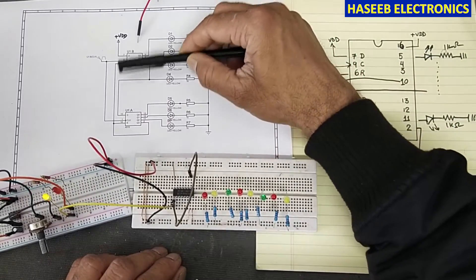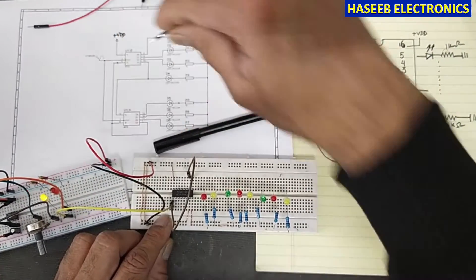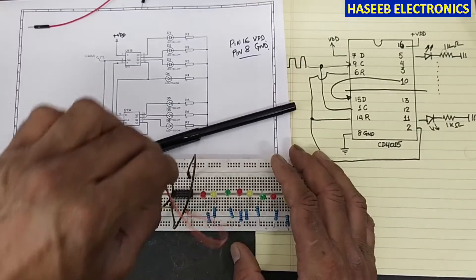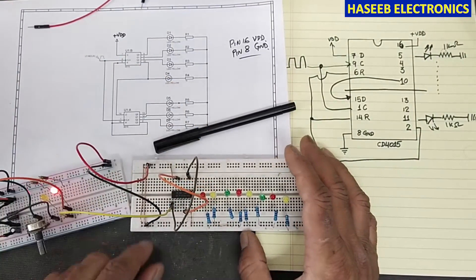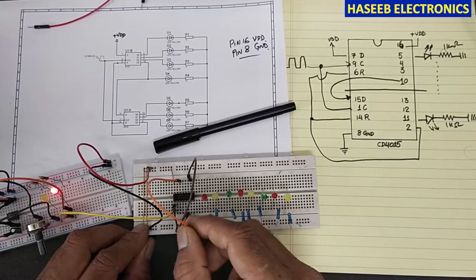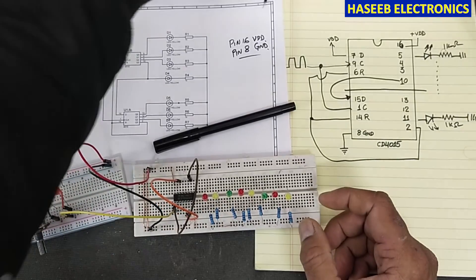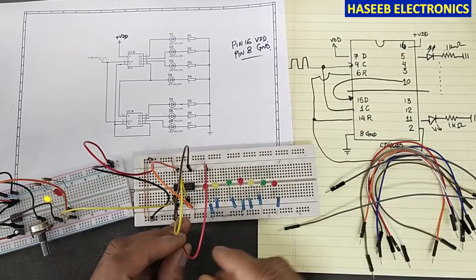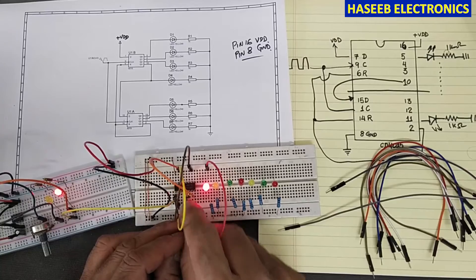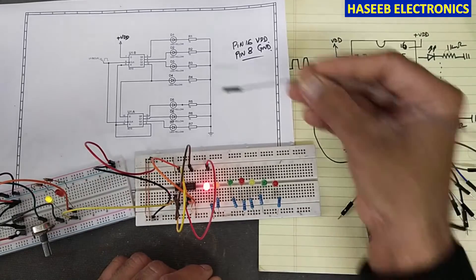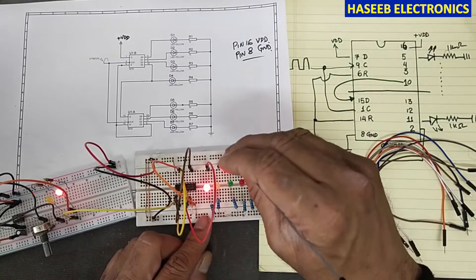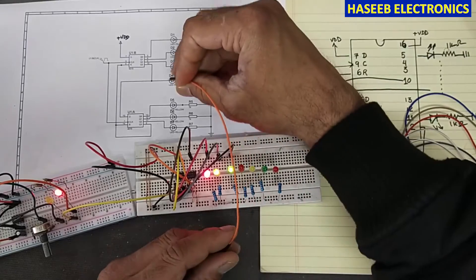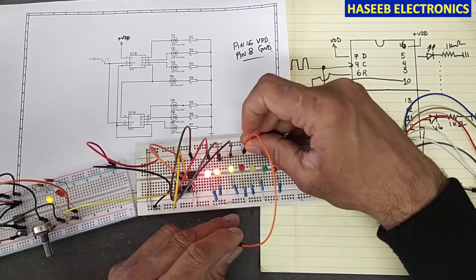Now we will apply the reset signal. Here is pin 6 and pin 14 for reset. Pins 14 and 6 are connected together. We will connect the first LED to pin 5, that is the first output. Then the second LED to pin 4, then pin 3 to the next stage.